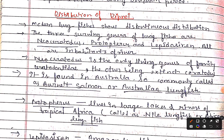The three surviving genera of lung fishes are Neoceratodus, Protopterus, and Lepidosiren. These three surviving genera are now living. All three are inhabitants of rivers.